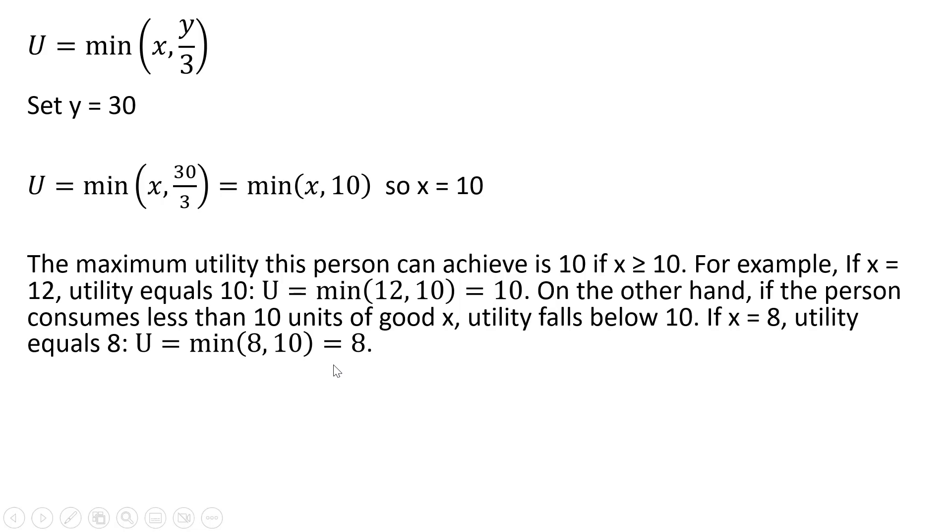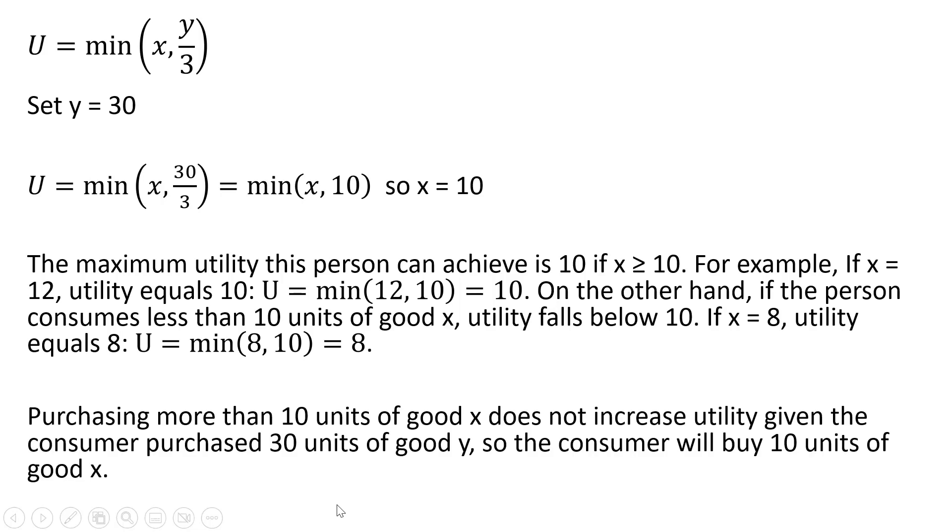So the only value that makes sense in terms of consumption for good x is going to be 10. So to recap, purchasing more than 10 units of good x does not increase utility, given the consumer purchased 30 units of good y. So the consumer will buy 10 units of good x.